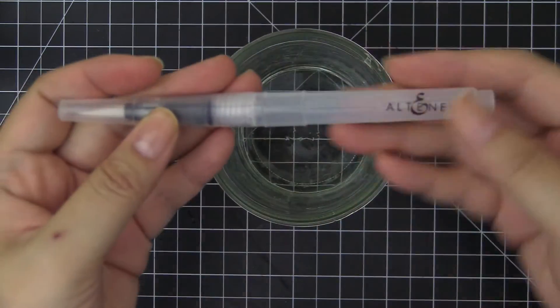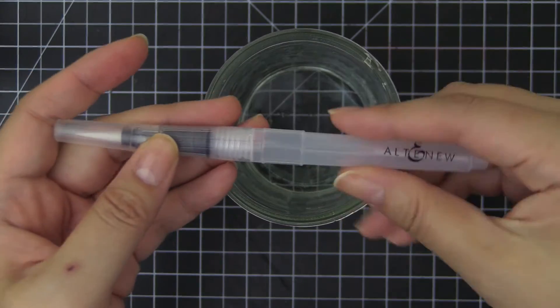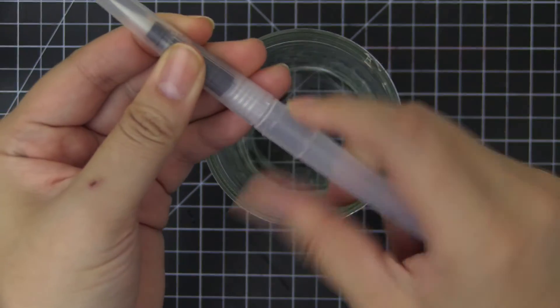You can fill the barrel portion of the brush by adding water using a dropper or by putting it under running water.